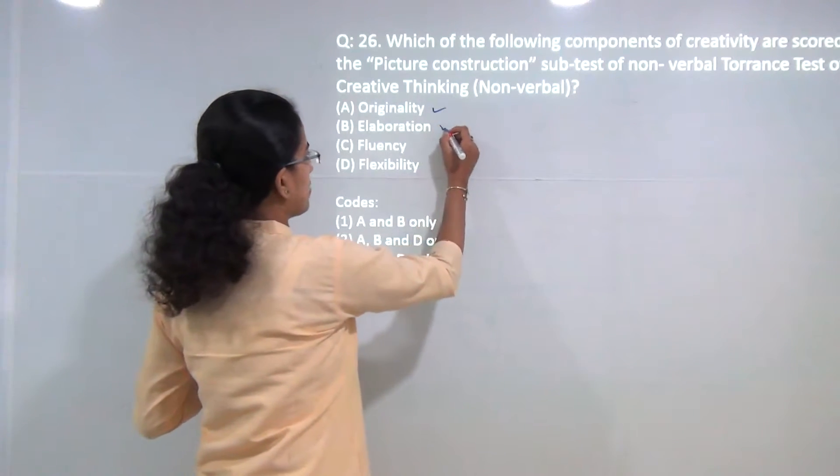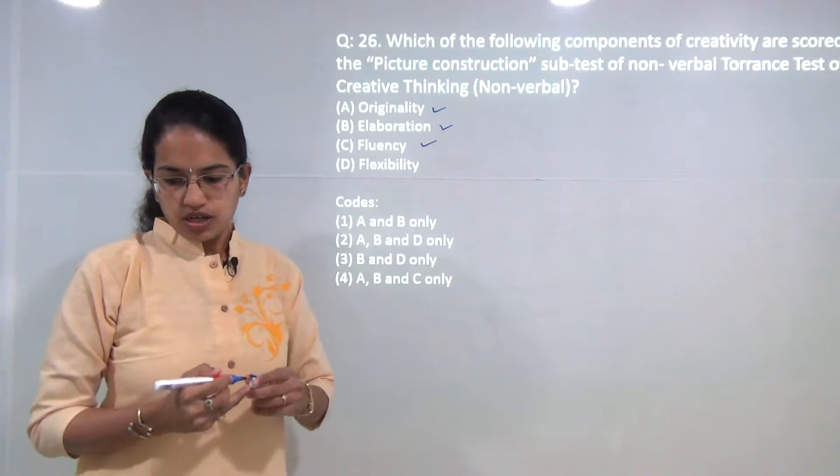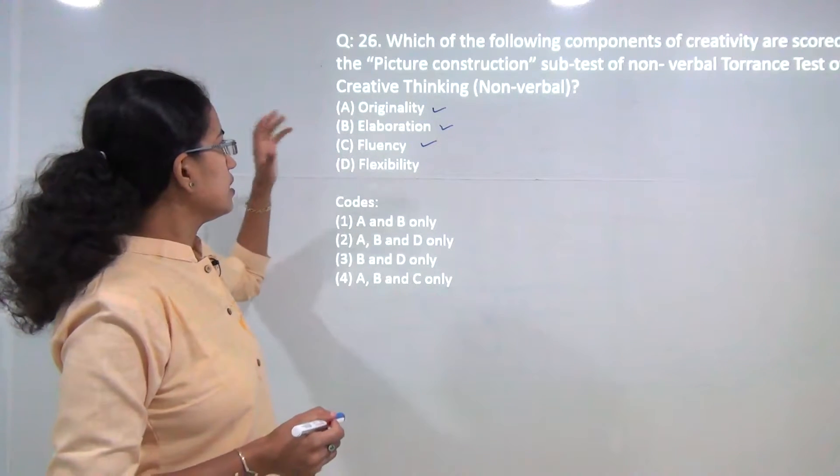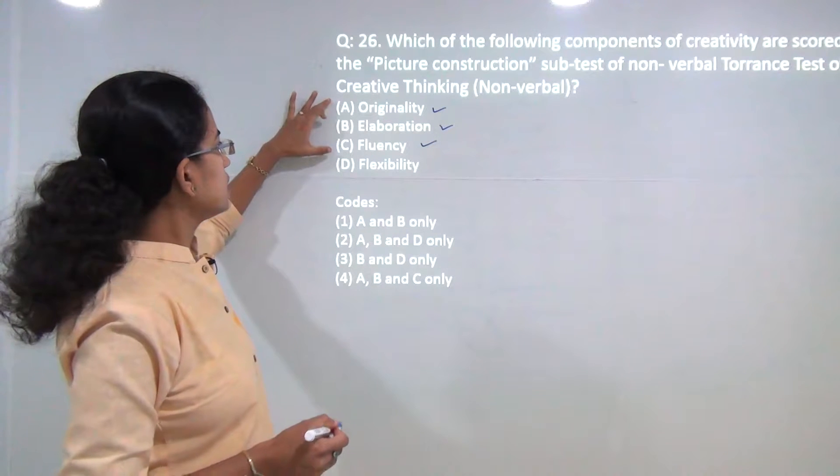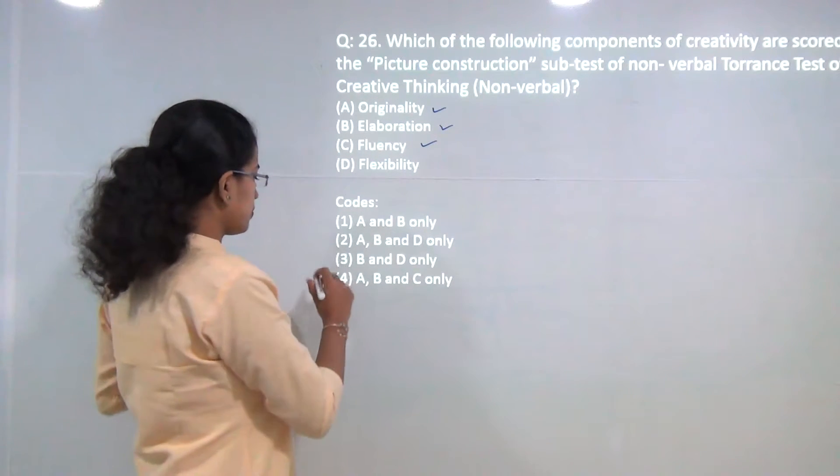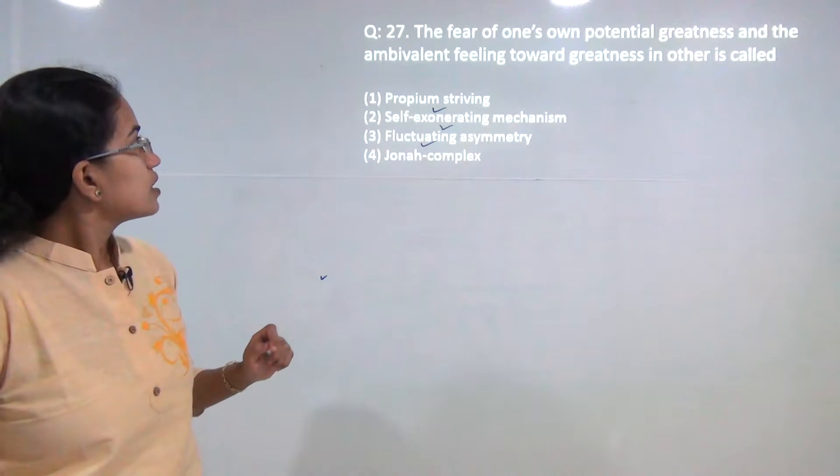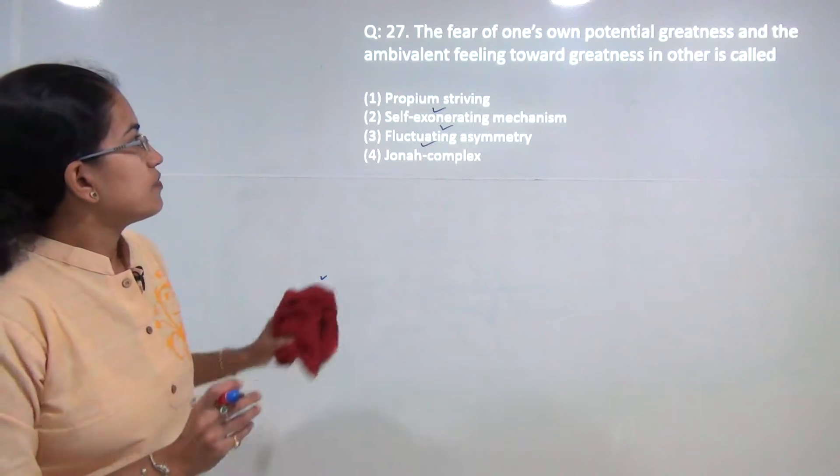Those were originality, elaboration, fluency, abstraction, and the resistance to premature closing. So these are the five things that were included. You have A, B, and C as the correct option, so four would be the correct answer here.